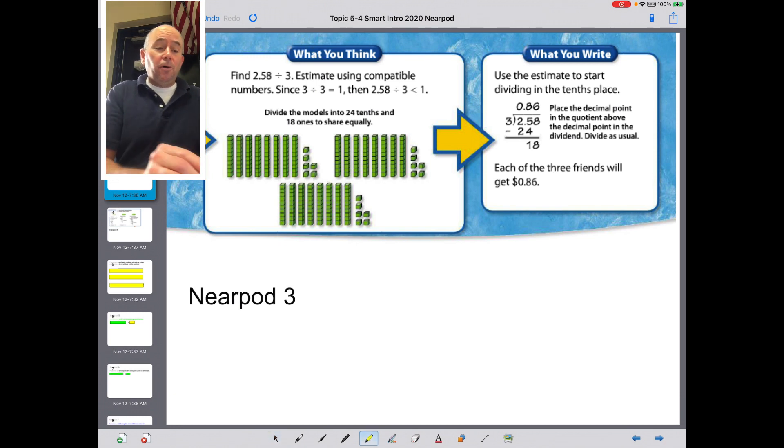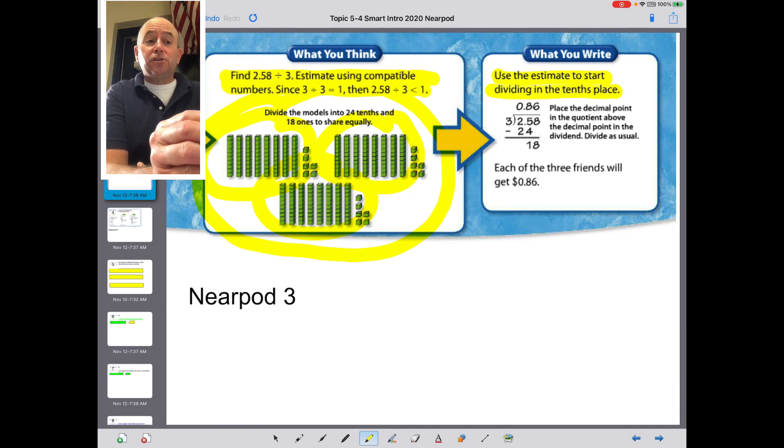So now we go into the, what do you think? Well, we think this. They think, find $2.58 divided by 3. Estimate using compatible numbers. So should they estimate? And so then they show the whole process by which they estimate.